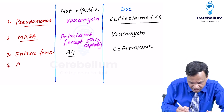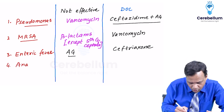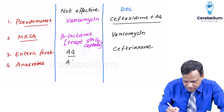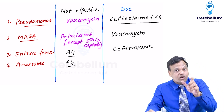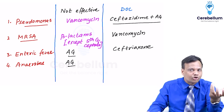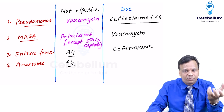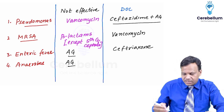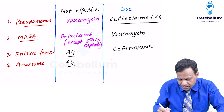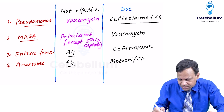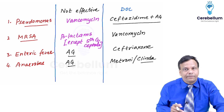Next, which drug is not effective against anaerobic bacteria? Again, the answer is aminoglycosides. Remember, aminoglycosides require oxygen to enter the bacteria. If oxygen is not used by the bacteria, they cannot enter and will not be effective. The drug of choice for anaerobic bacteria is normally metronidazole for GIT infections, whereas clindamycin is used for lung abscess and brain abscess.